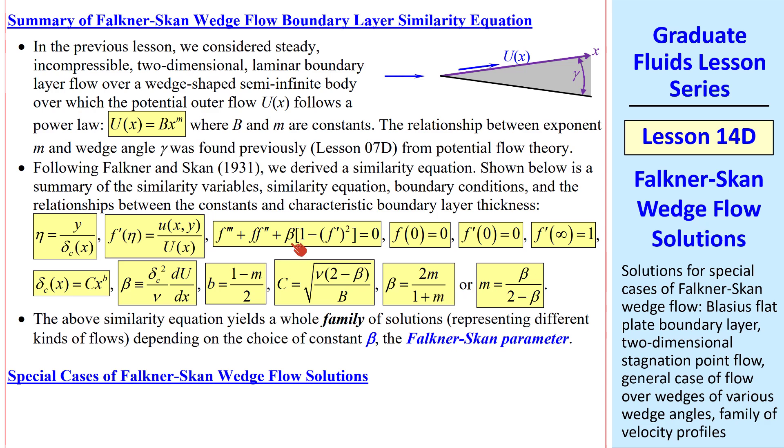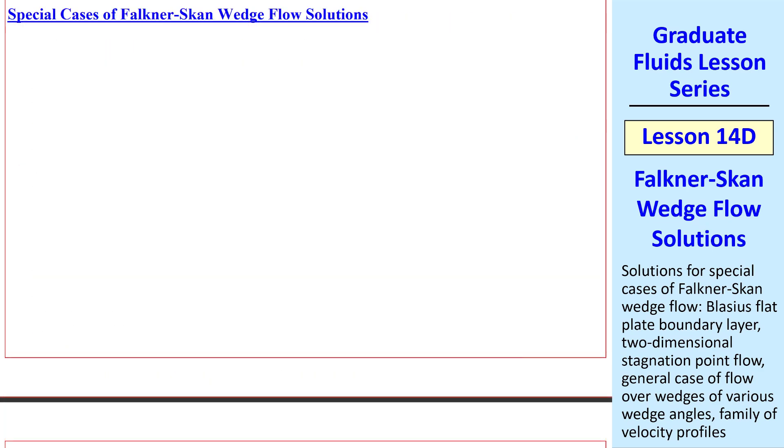The Falkner-Skan parameter beta determines the type of flow, namely the wedge angle, and thus the power law. In fact, we get a whole family of solutions depending on choice of beta, the Falkner-Skan parameter. So what I'll do here is look at some special cases.